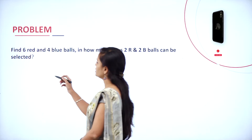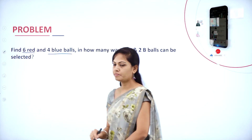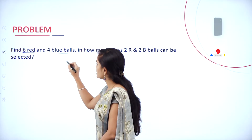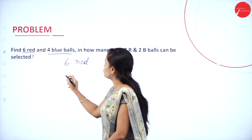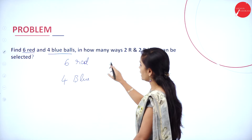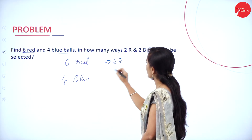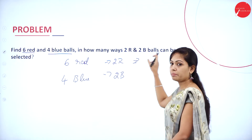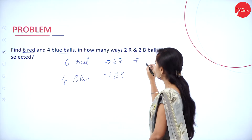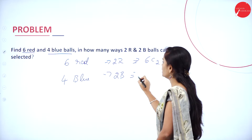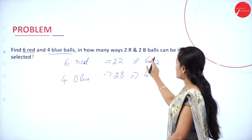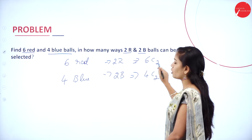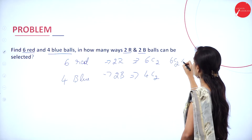The first problem: given 6 red and 4 blue balls, in how many ways can 2 red and 2 blue balls be selected? It is very simple. We use 6C2 into 4C2 — selecting 2 red from 6 red and 2 blue from 4 blue.